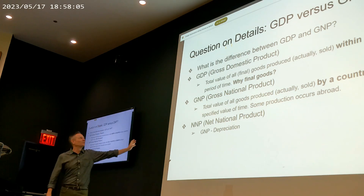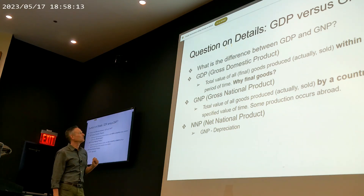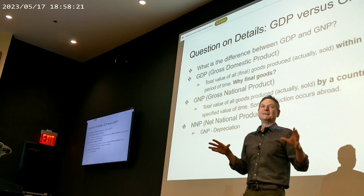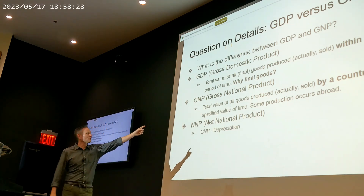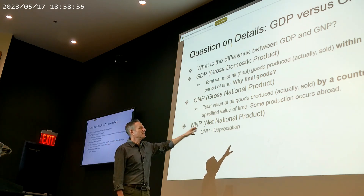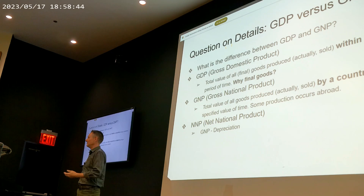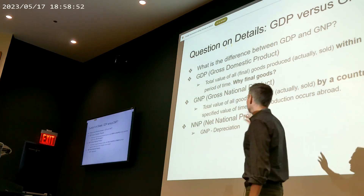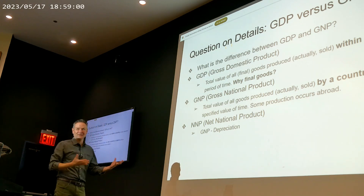GDP is defined as the total value of all goods produced within a country during a specified period of time — everything physically produced inside the United States. That's gross domestic product. GNP is the total value of all goods produced by a country's citizens during a specified period, so some production might happen abroad. For example, if you're living in England and doing consulting in the U.S., that service would go into GNP. One refers to the citizenry; the other refers to the physical region of the United States.